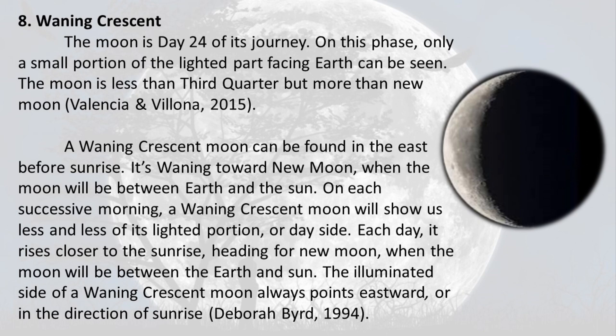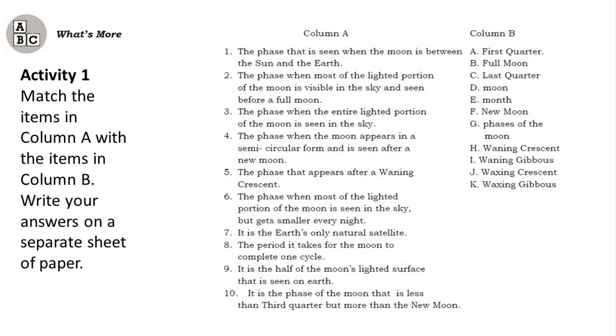Phase 8 — Waning Crescent: The moon is on day 24 of its journey. On this phase, only a small portion of the lighted part facing Earth can be seen. The moon is less than third quarter but more than new moon. A waning crescent moon can be found in the east before sunrise, waning toward new moon when the moon will be between Earth and the Sun. On each successive morning, a waning crescent moon shows less and less of its lighted portion. The illuminated side of a waning crescent moon always points eastward, in the direction of sunrise.